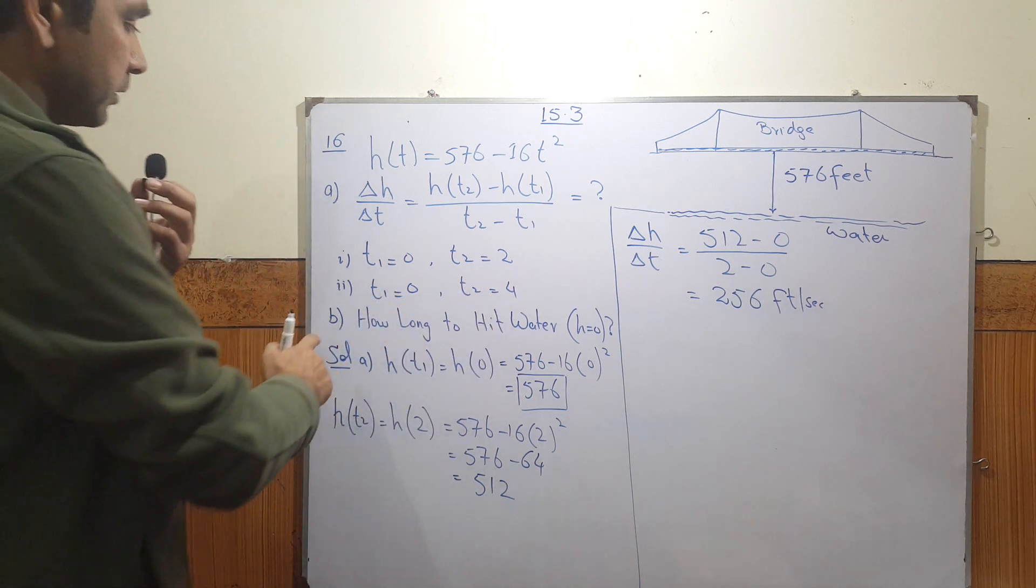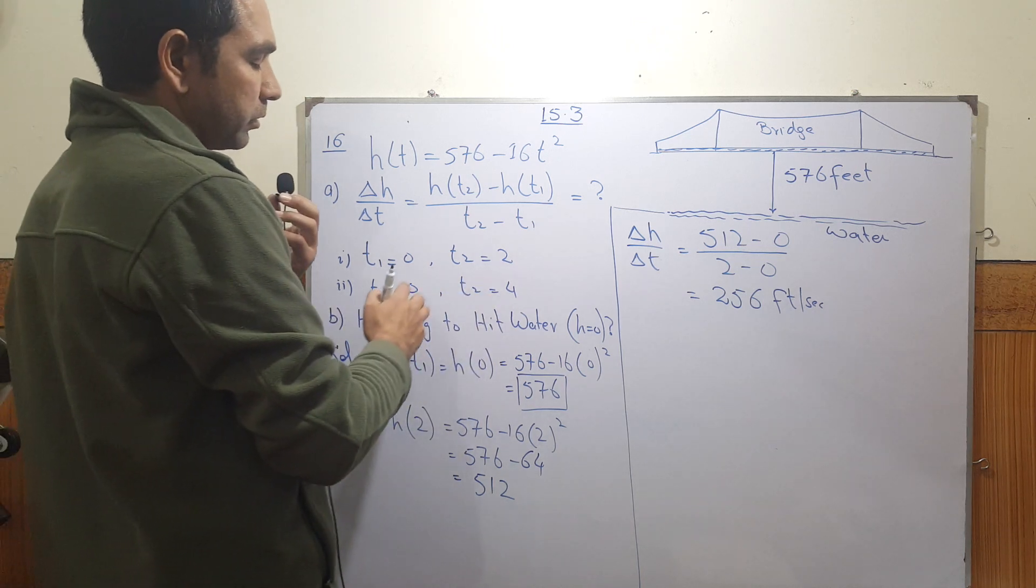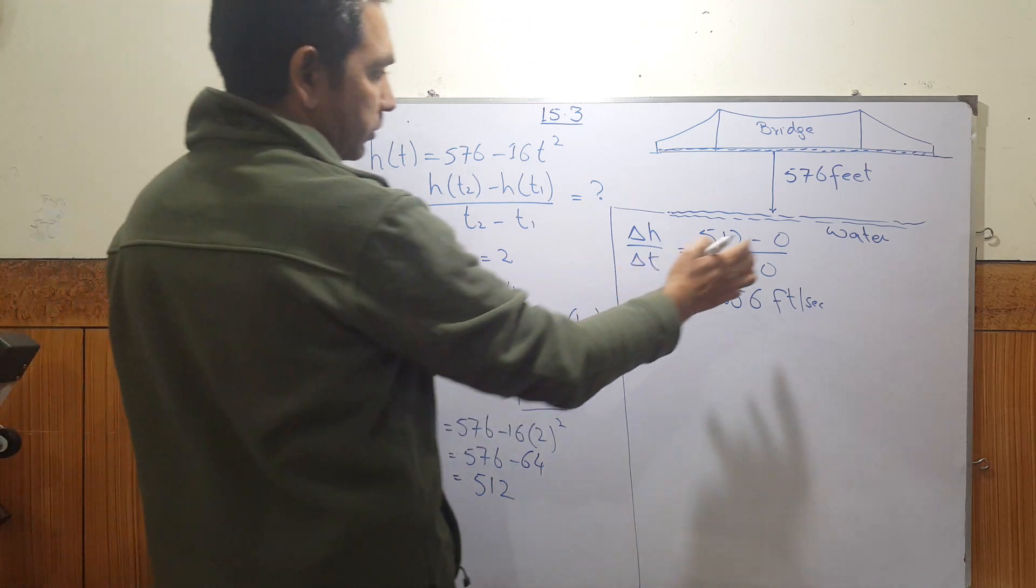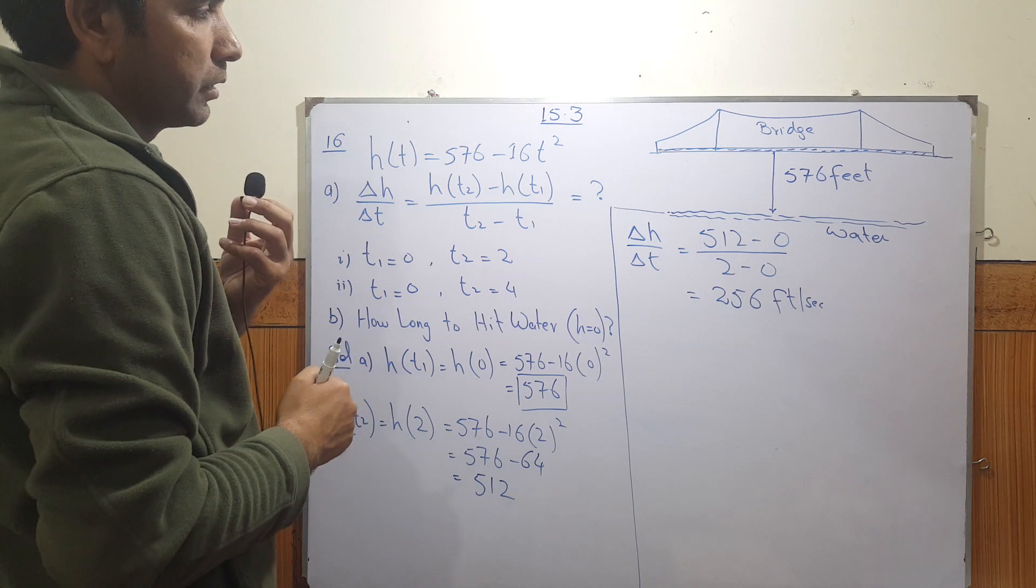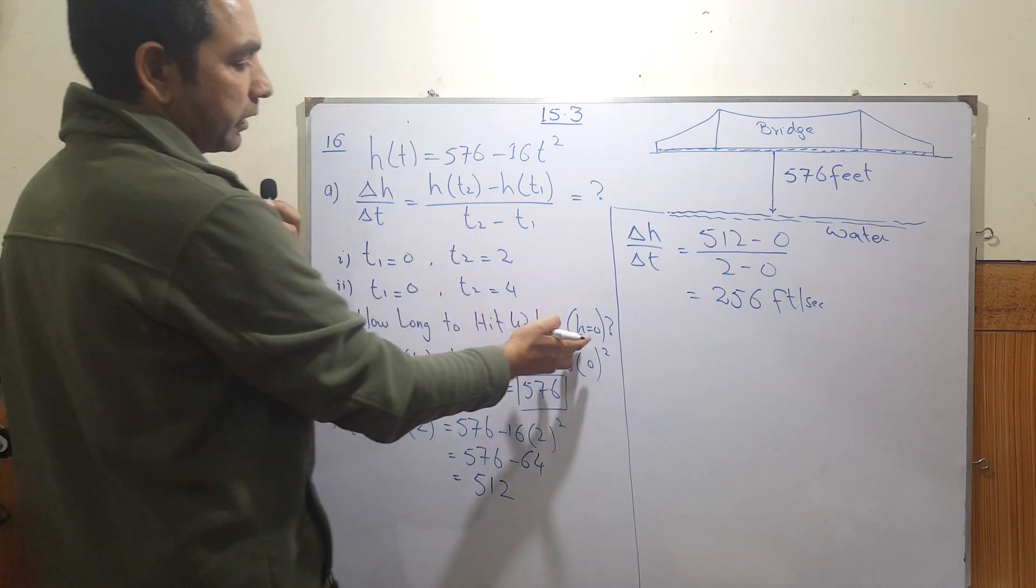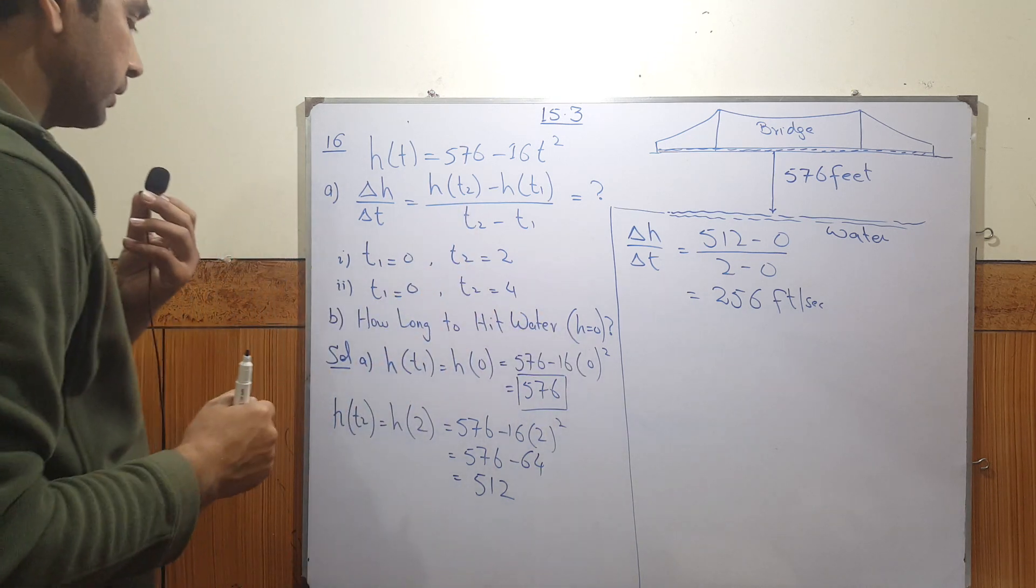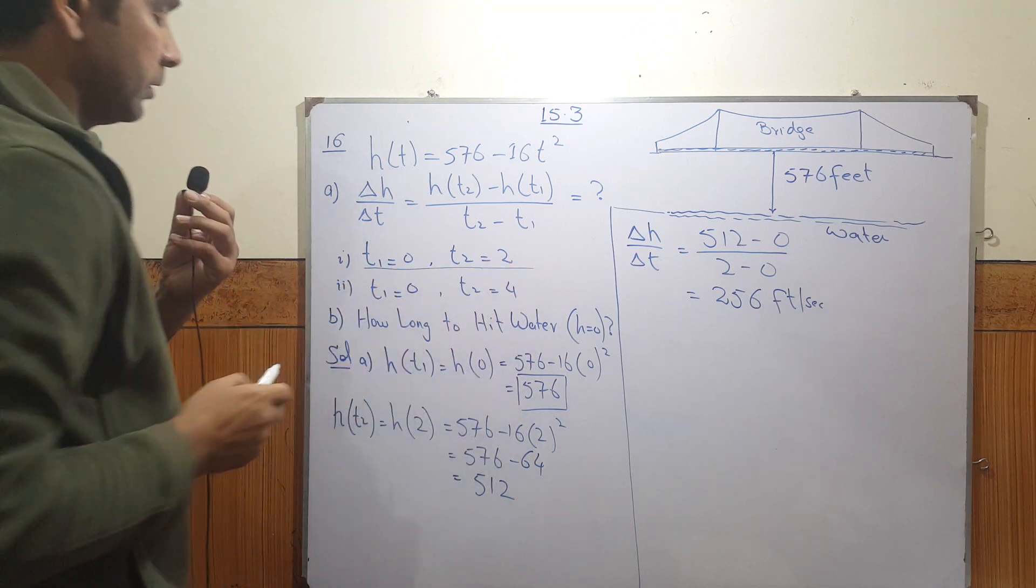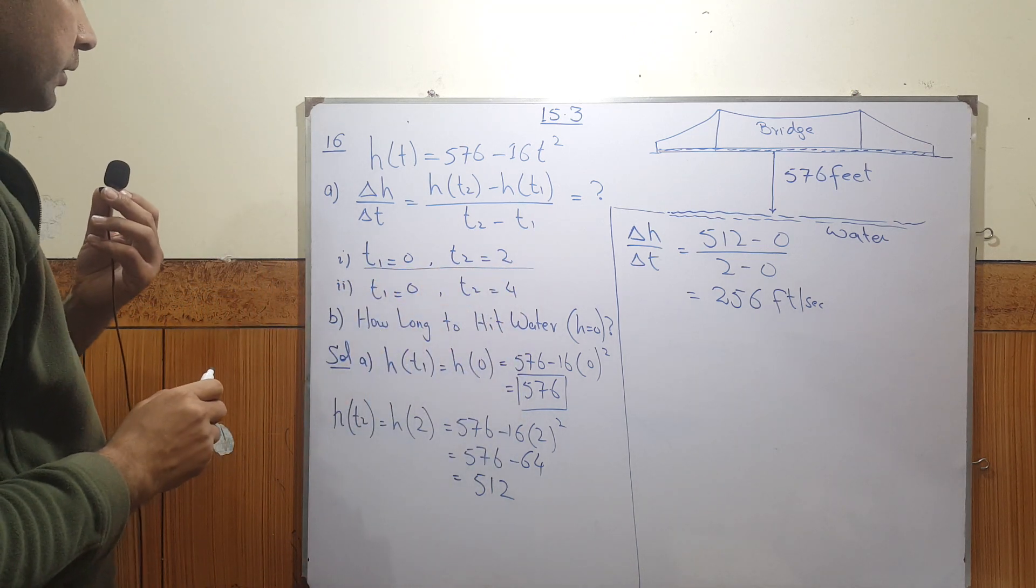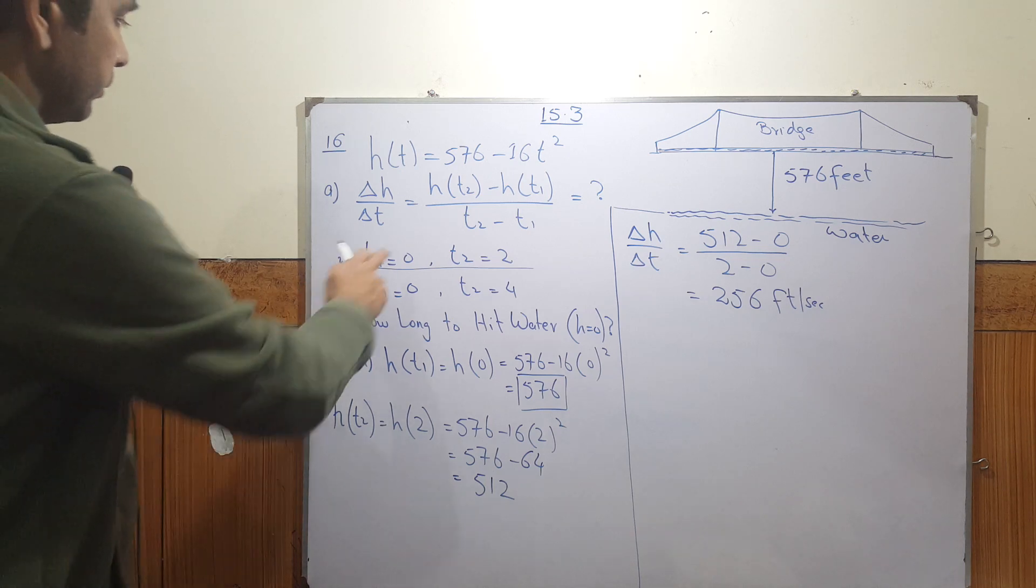And in part B they're asking how long will it take for the object to hit the water. So we need to find out the time when it hits the water, that means when height is zero. So the first thing we have to do is find out the average rate of change of the height with respect to time.